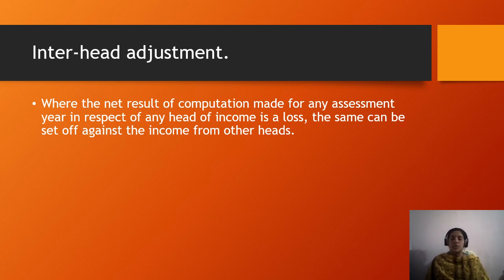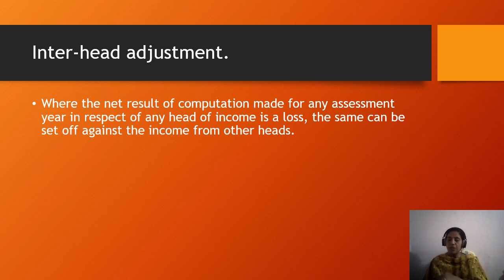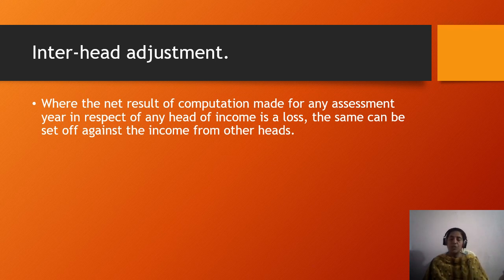In summary, there are two types of adjustments: intra-head adjustment (also called inter-source adjustment) and inter-head adjustment. There is also set off of losses and carry forward of losses. The provisions will be explained in detail in the next video. Thank you.